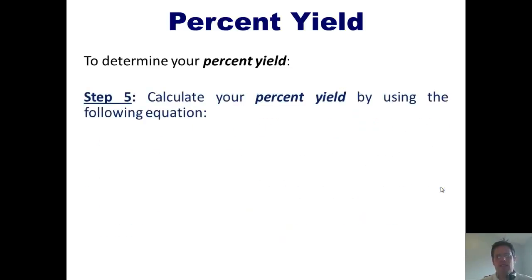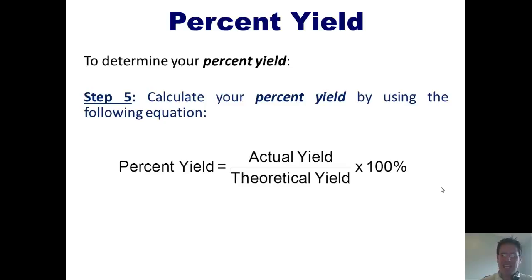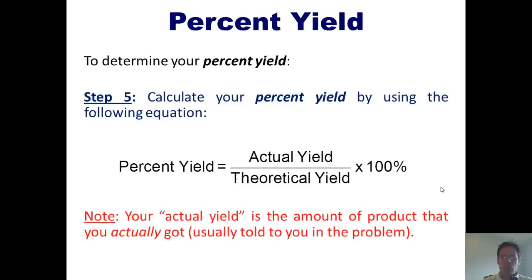Step five is we then calculate our percent yield by using this equation. Percent yield equals actual divided by theoretical times 100. Where actual yield is the amount of product that you actually got, which is usually given to you in the particular problem.